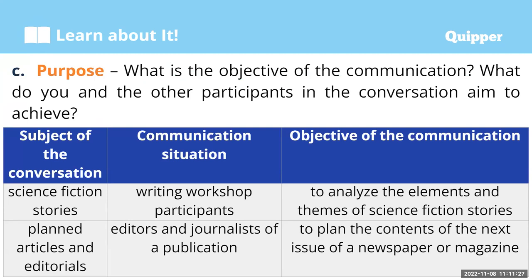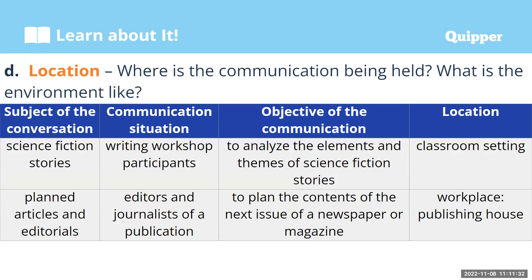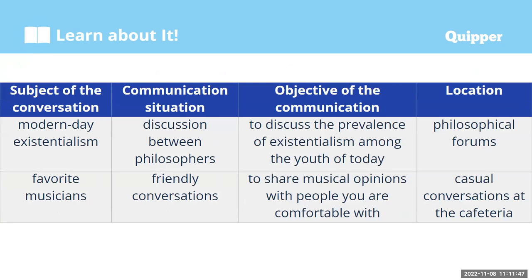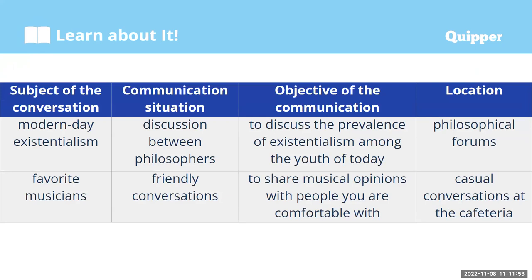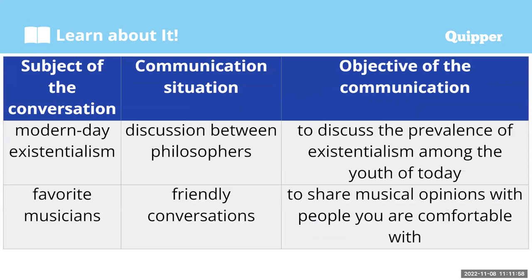So these are different examples of subjects of conversation, possible communication situations, and objectives of communication — highlighting the key factors of audience, topic, and purpose. We also put into consideration the location: where is the communication being held, and what is the environment like? Examples include a classroom setting, a workplace such as a publishing house, philosophical forums, or casual conversations in the cafeteria.